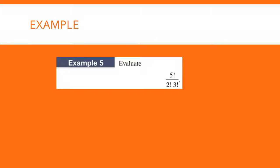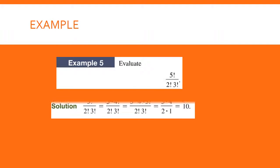Now you try this one — pause the recording, give it a try, and resume to check your answer. The easiest thing to do is to write five factorial as five times four times three factorial. The three factorials cancel and leave you with five times four over two times one. You can cancel the two with the four, giving you 10.